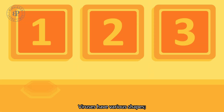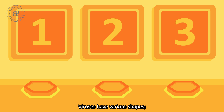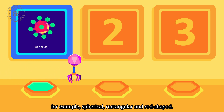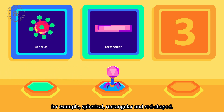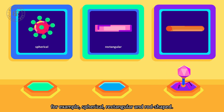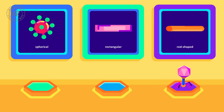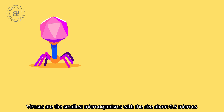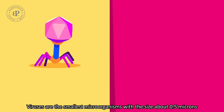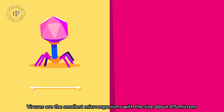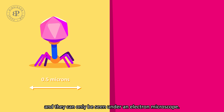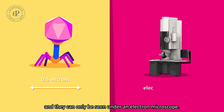Viruses have various shapes, for example, spherical, rectangular, and rod-shaped. Viruses are the smallest microorganisms with a size of about 0.5 microns, and they can only be seen under an electron microscope.